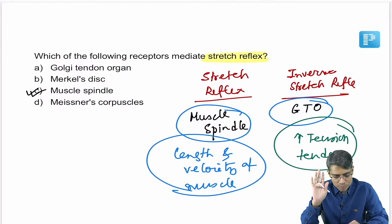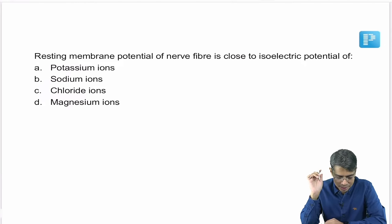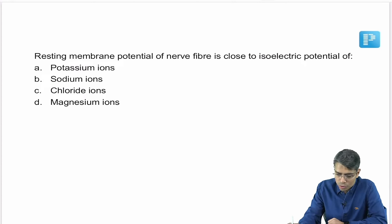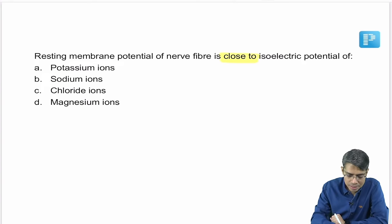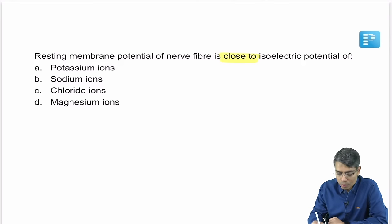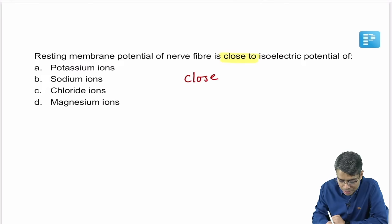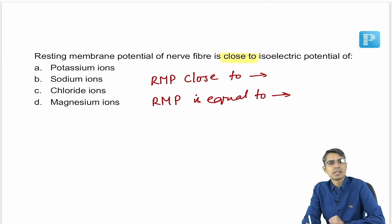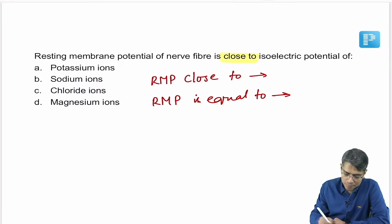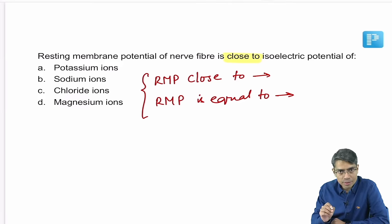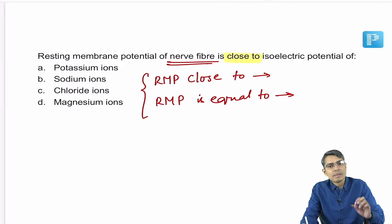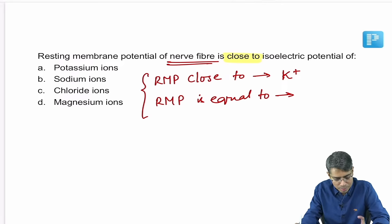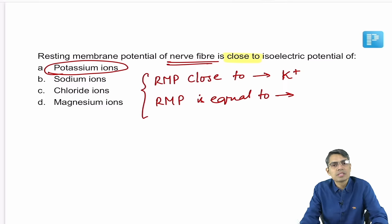Next question: resting membrane potential of the nerve fiber is close to which ion? Remember two distinct questions — RMP is 'close to' versus RMP is 'equal to.' When the question says close to, your answer is always potassium. If the question says 'RMP of the neuron is equal to,' you must identify the actual RMP value.